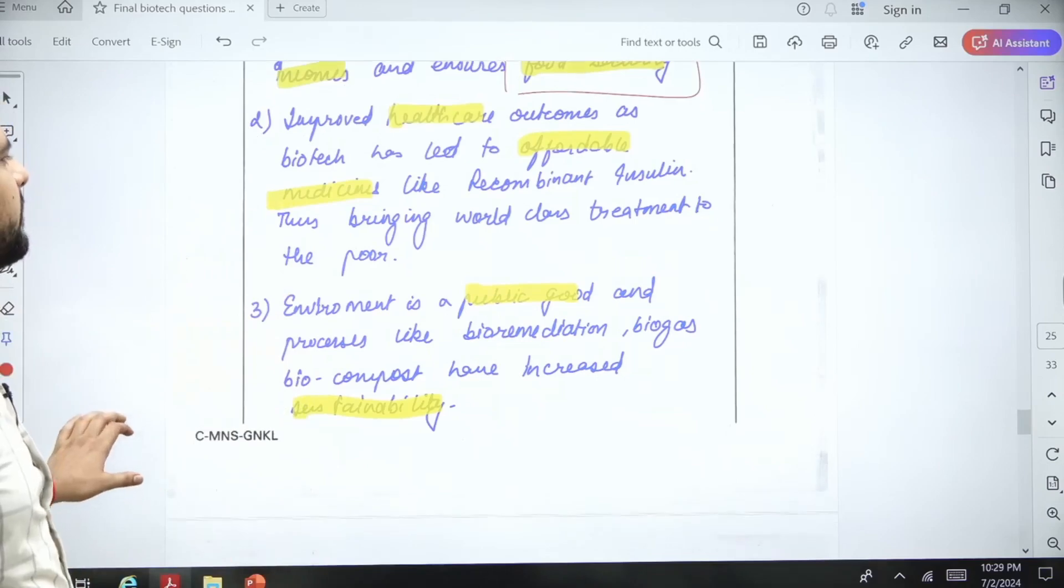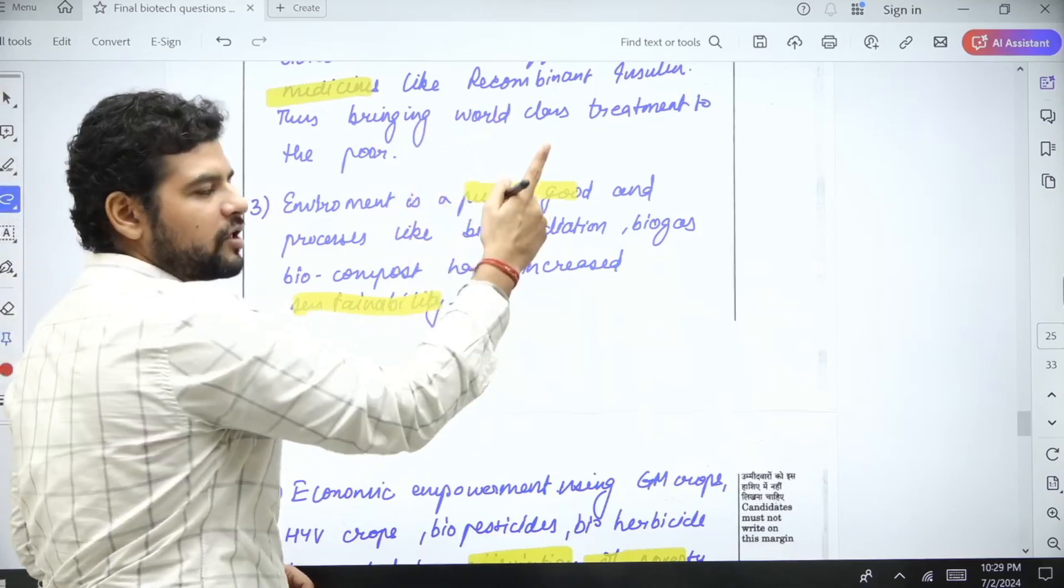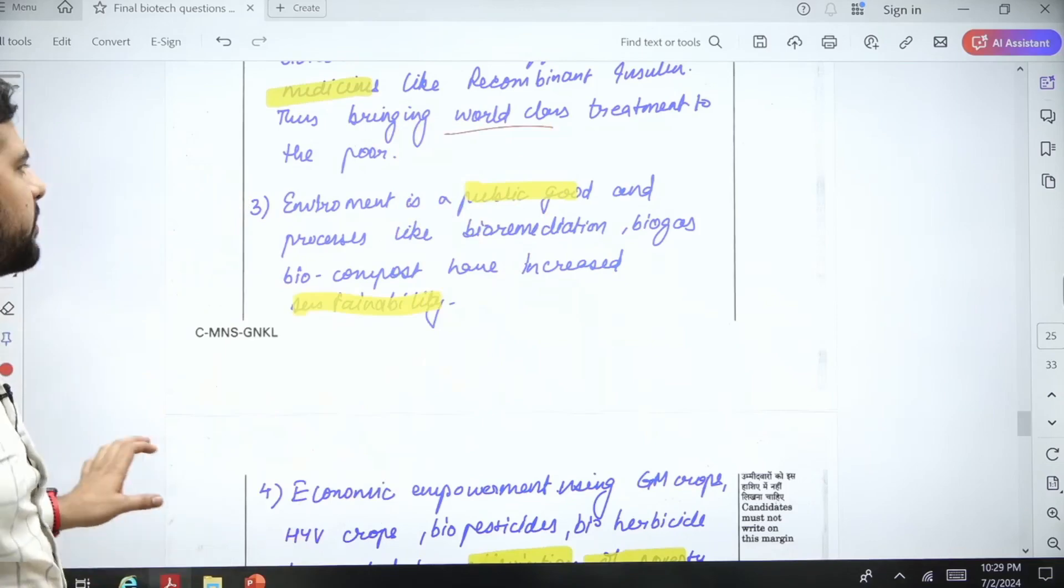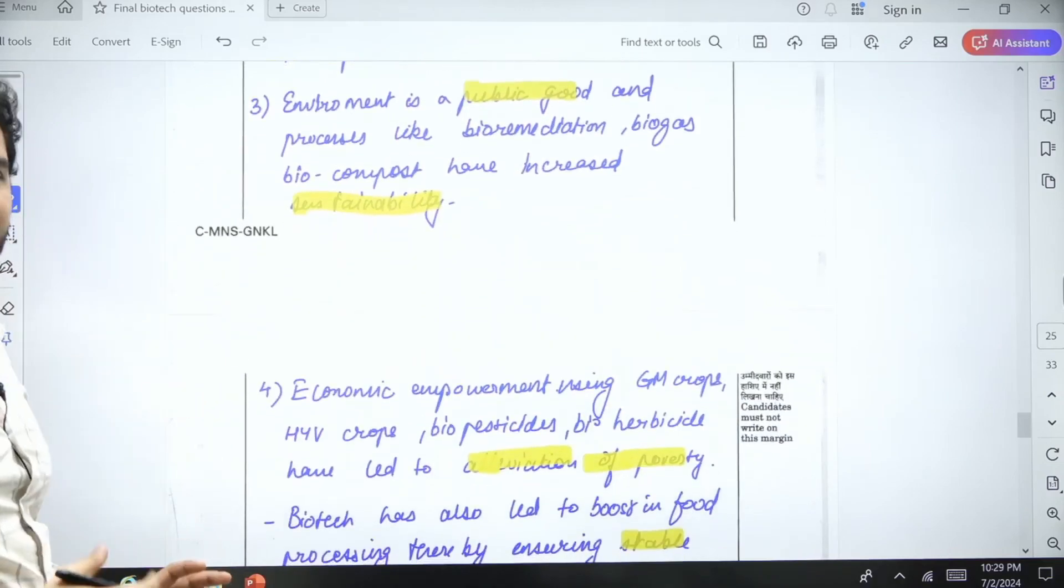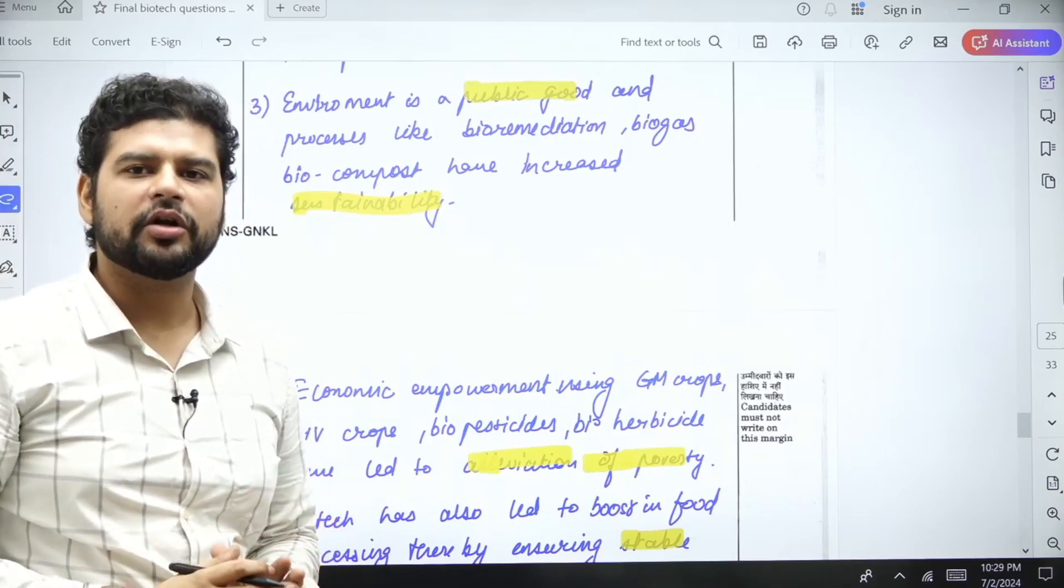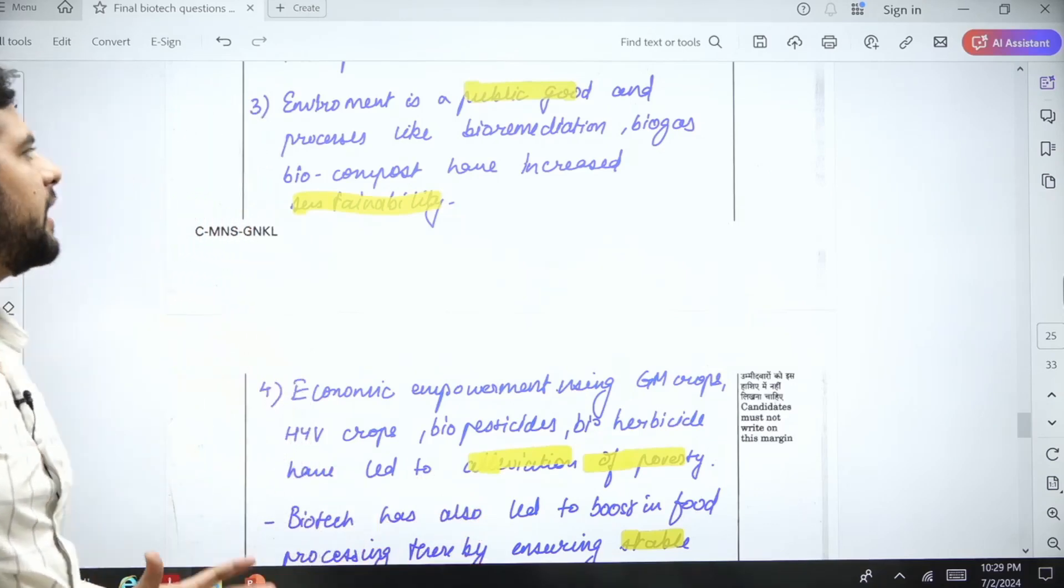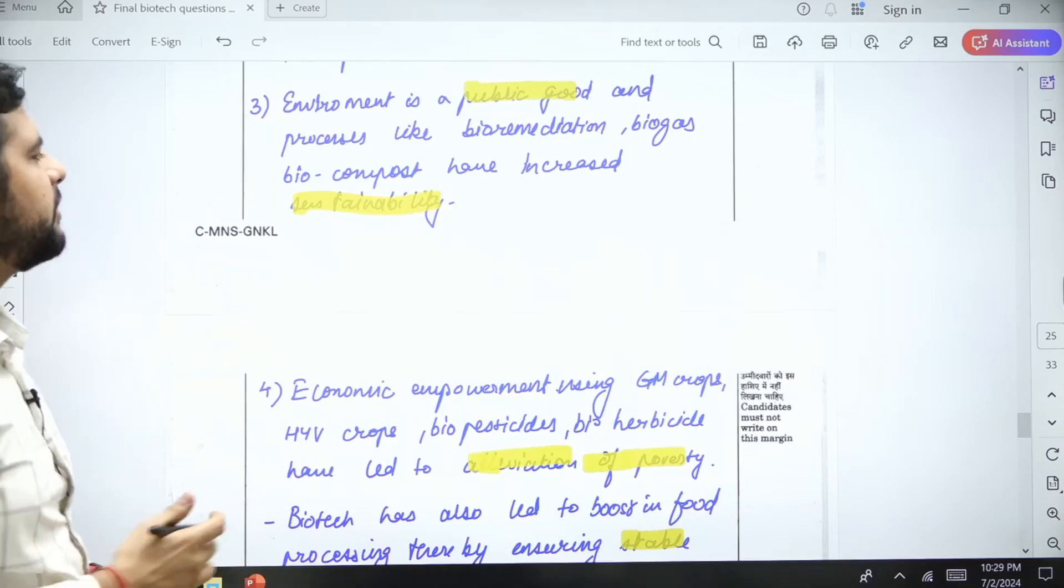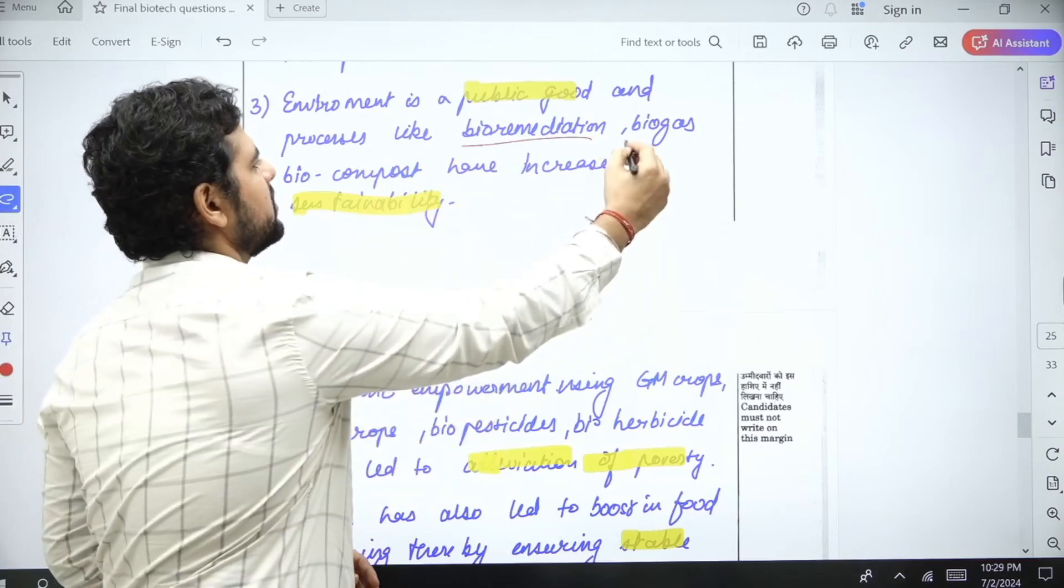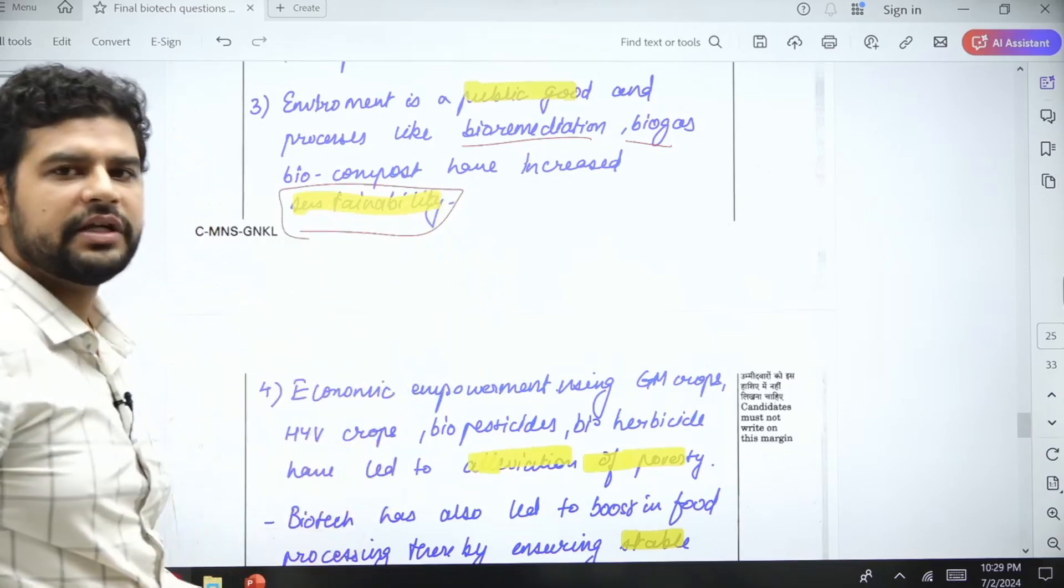All these things will lead to improved outcomes for the poorer sections. Basically, biotechnology is bringing world-class treatment to the doorsteps of poor people. Environment is a public good; it is there for everyone. It is not a special service for some special people. Processes like bioremediation using biological things—biogas—have increased sustainability of the environment.